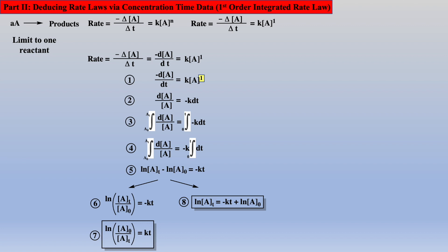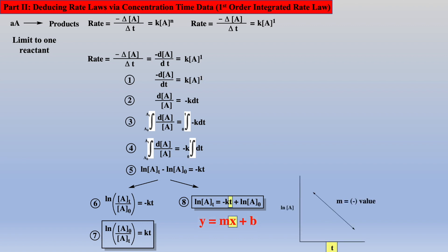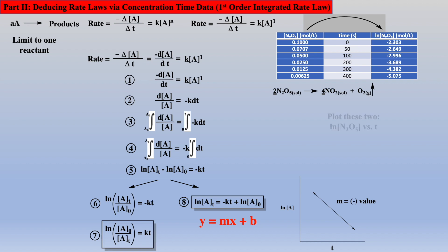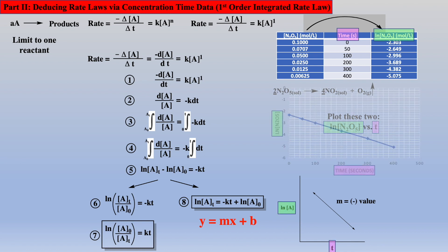Equation 8 is very useful. Looking closer, we see it as a linear equation, y equals mx plus b, where a plot of time on the x-axis versus natural log of the concentration of A on the y-axis will give a straight line. So let's examine time concentration data for the decomposition of N2O5. If we take the natural log of the concentrations and plot natural log of the concentrations versus time, we should generate a straight line if the reaction follows first order kinetics.